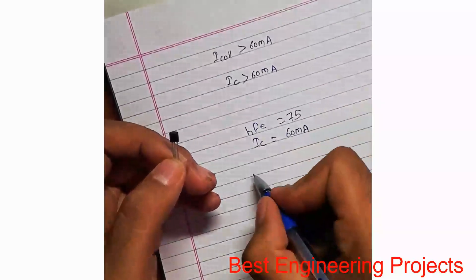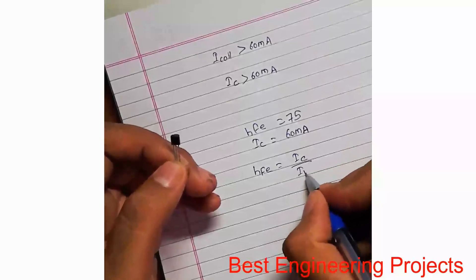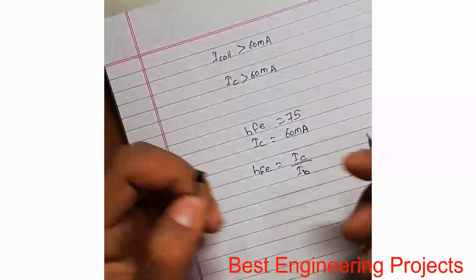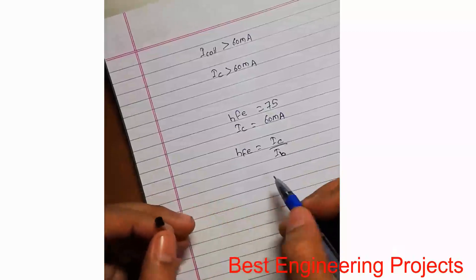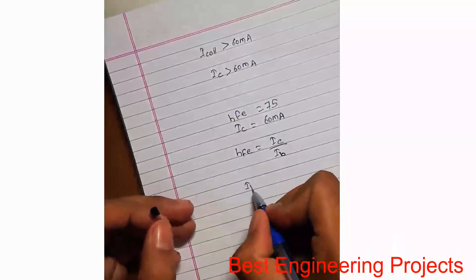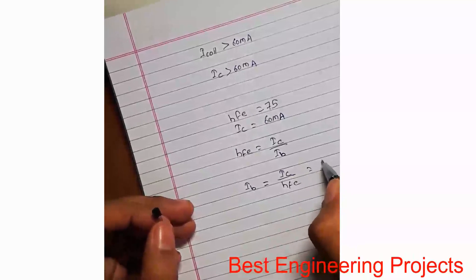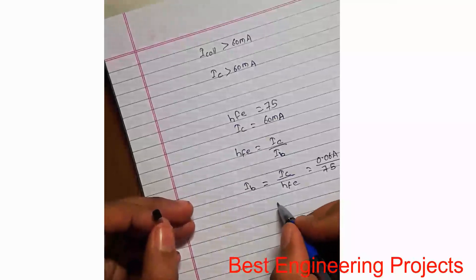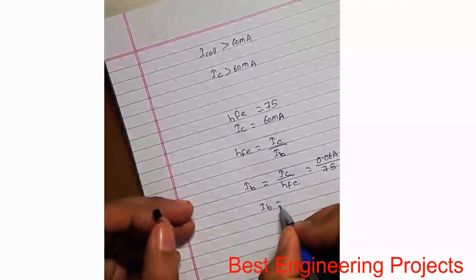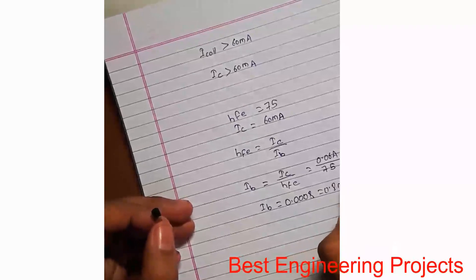From the equation HFE = IC / IB, we can calculate the base current for the BC548. IB = IC / HFE = 60mA / 75 = 0.0008 amperes, that is 0.8 milliamperes.